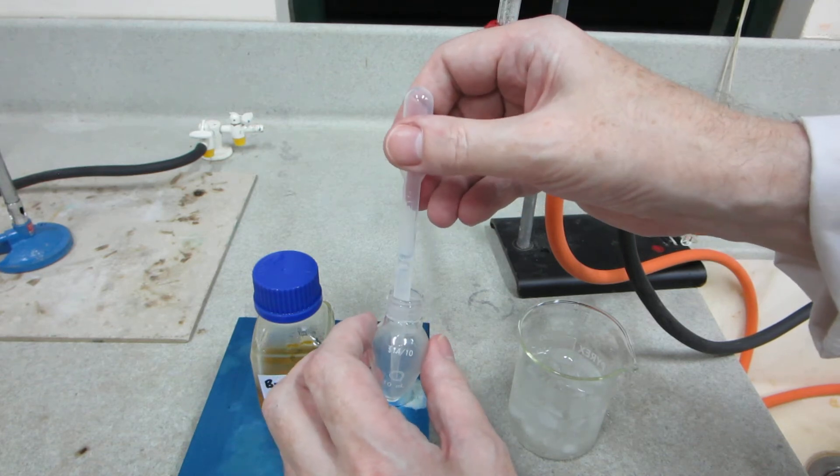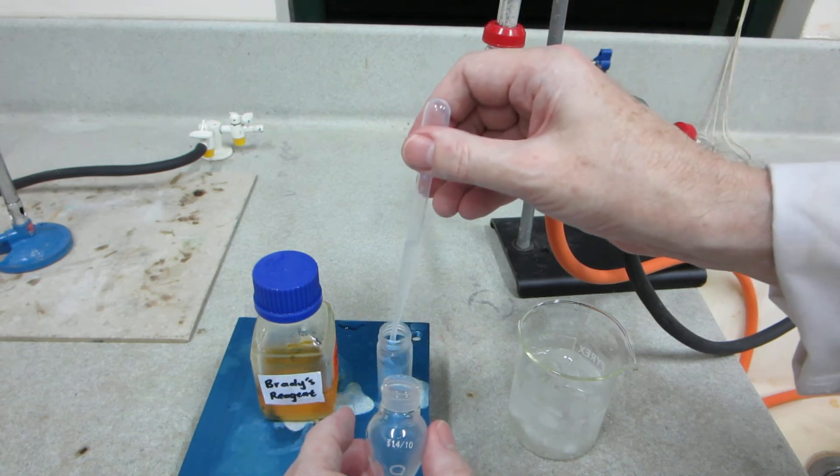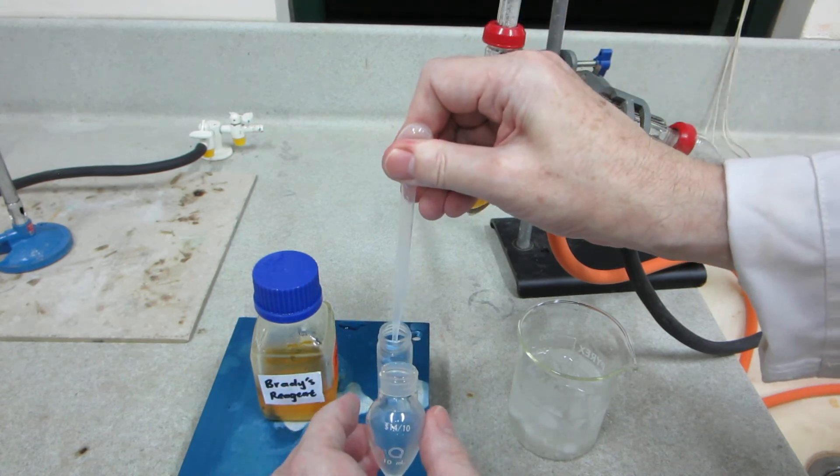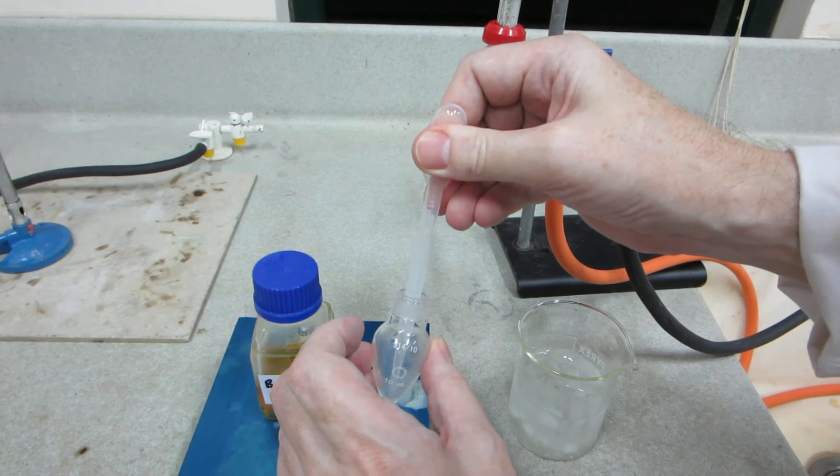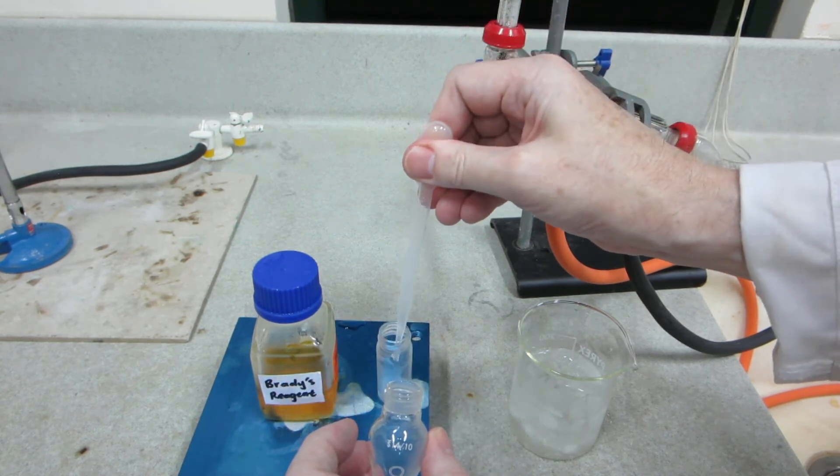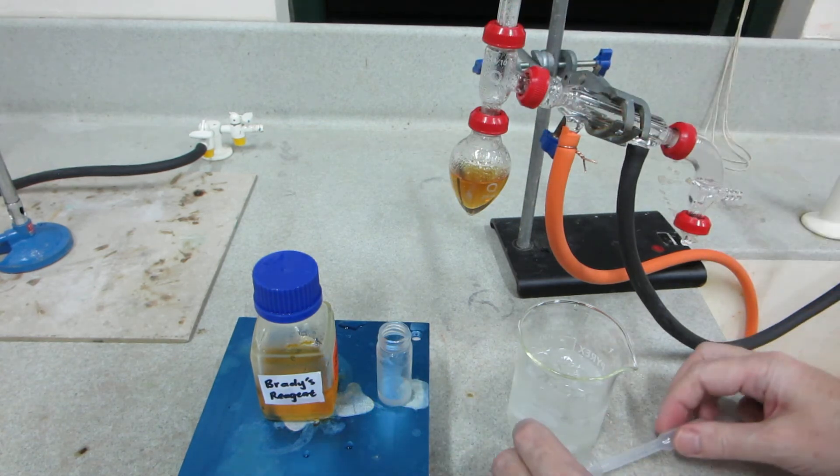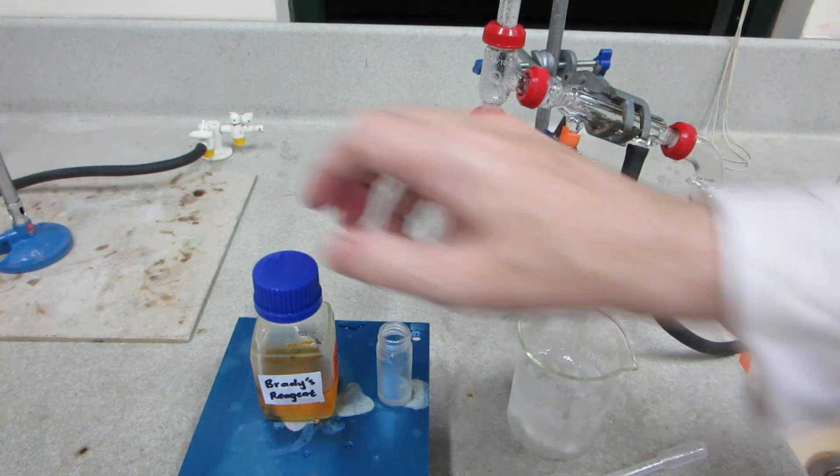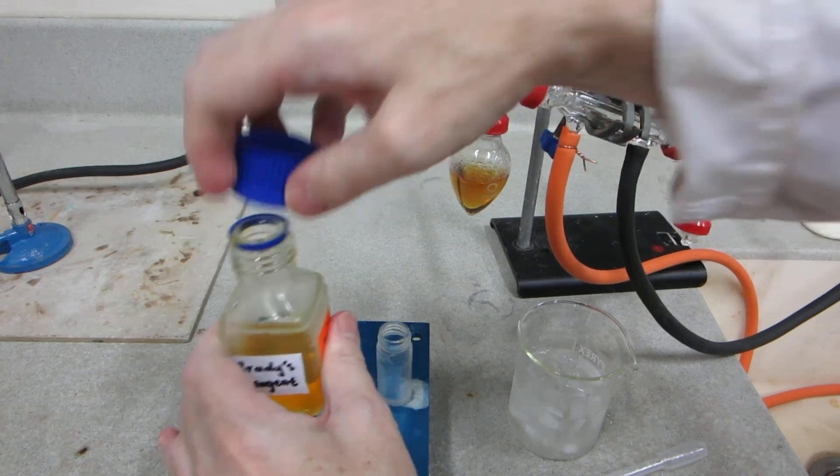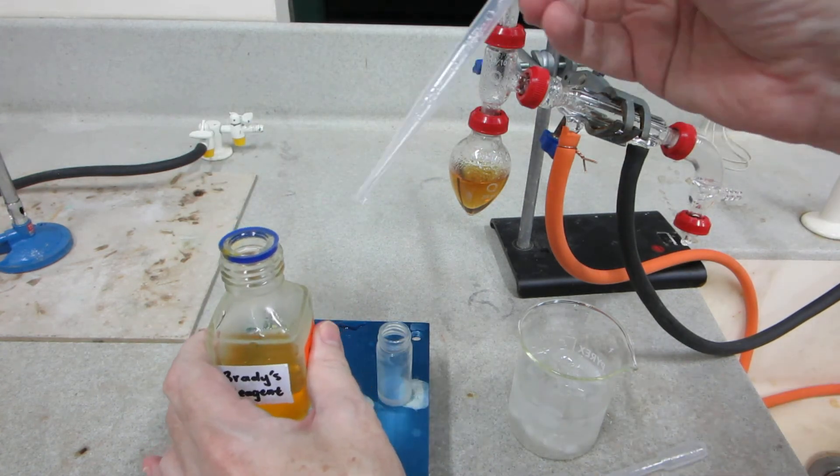As we noted, about 1.7 mils or 1.7 grams. Make sure we get all of that in there. And to that we'll be adding 5 mils of 2,4 DNP.